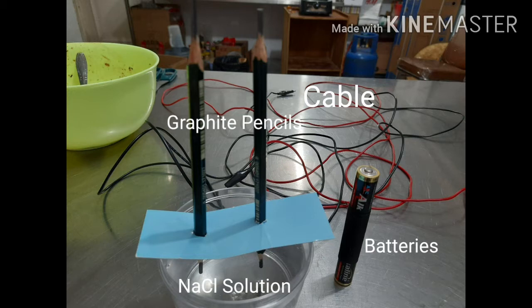First, fill up a container with salt water and place two graphite pencils which are propped up with a piece of cardboard in the container. Connect the cables to the pencils and secure them on the positive and negative side of the battery with tape.